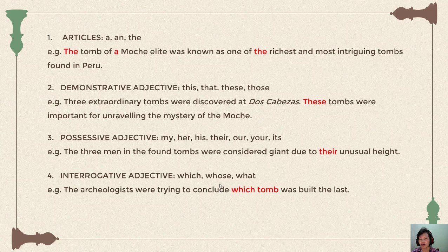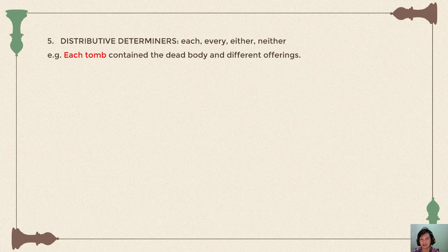The next type is distributive determiners: each, every, either, and neither. 'Each' and 'every' are interchangeable, but 'each' emphasizes the individual, while 'every' emphasizes the group as a whole. 'Either' means one or the other (positive), and 'neither' means not one or the other. Example: 'Each tomb contains a dead body and different offerings.'